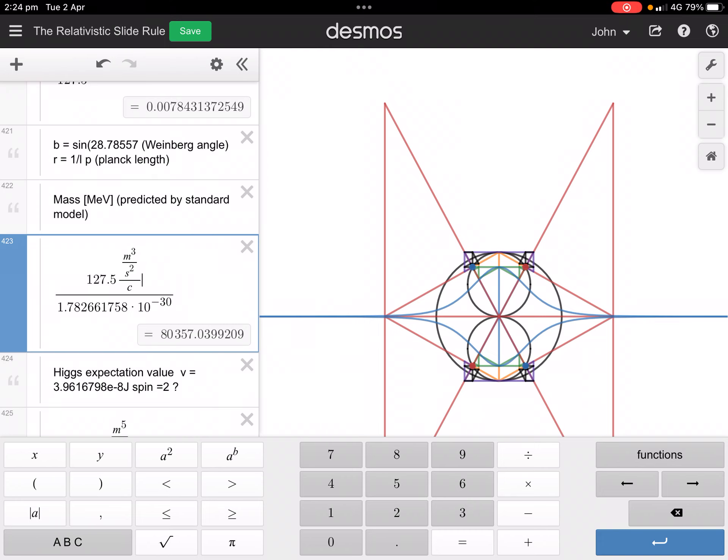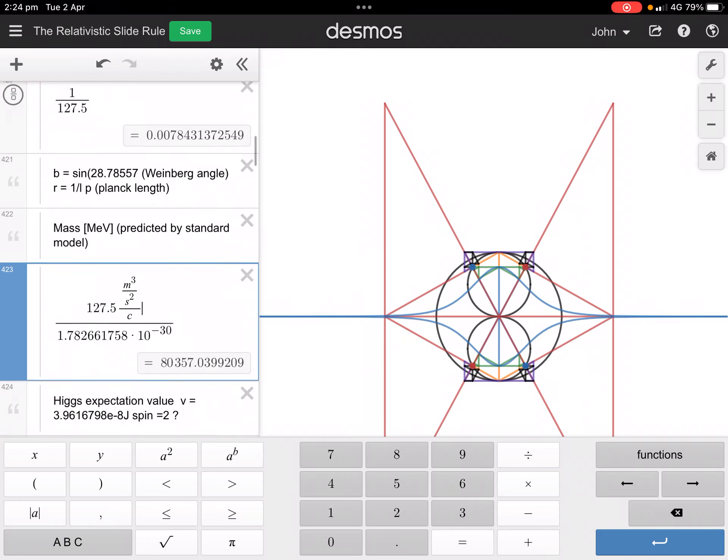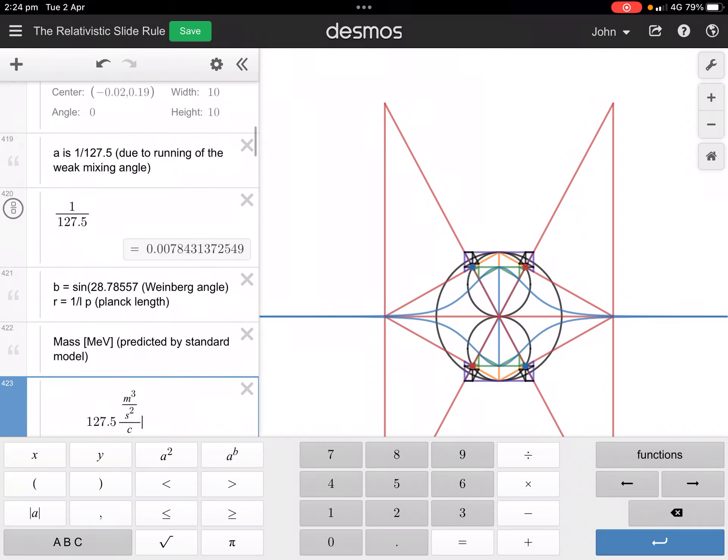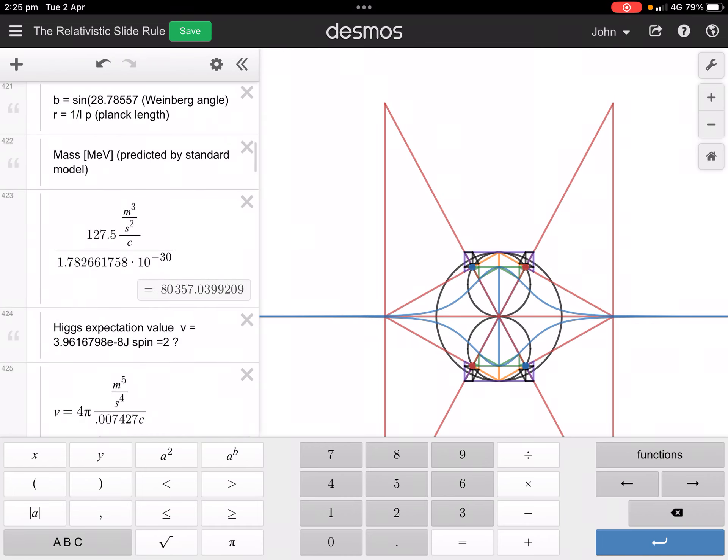In MeV, and apparently the fine structure constant increases at the level of the Z boson at that energy level up to 1 over 127.5, so I've put that in. I did have a problem because I thought my mass wasn't quite right for the angle.